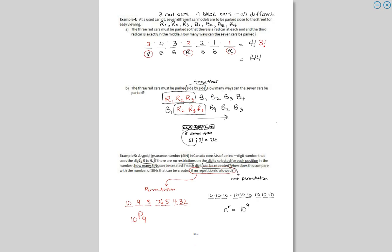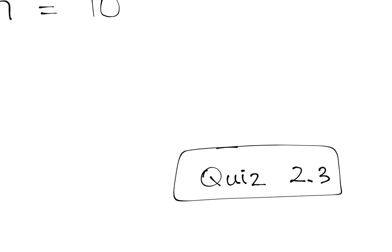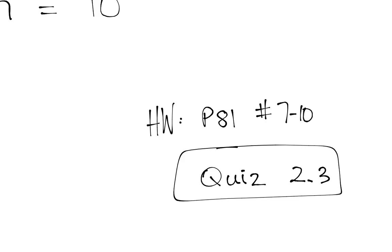That's it for that lesson. The quiz is 2.3. The homework is page 81, numbers 7 to 10, and 12 to 15 — the same page as yesterday's homework but a different set of questions.